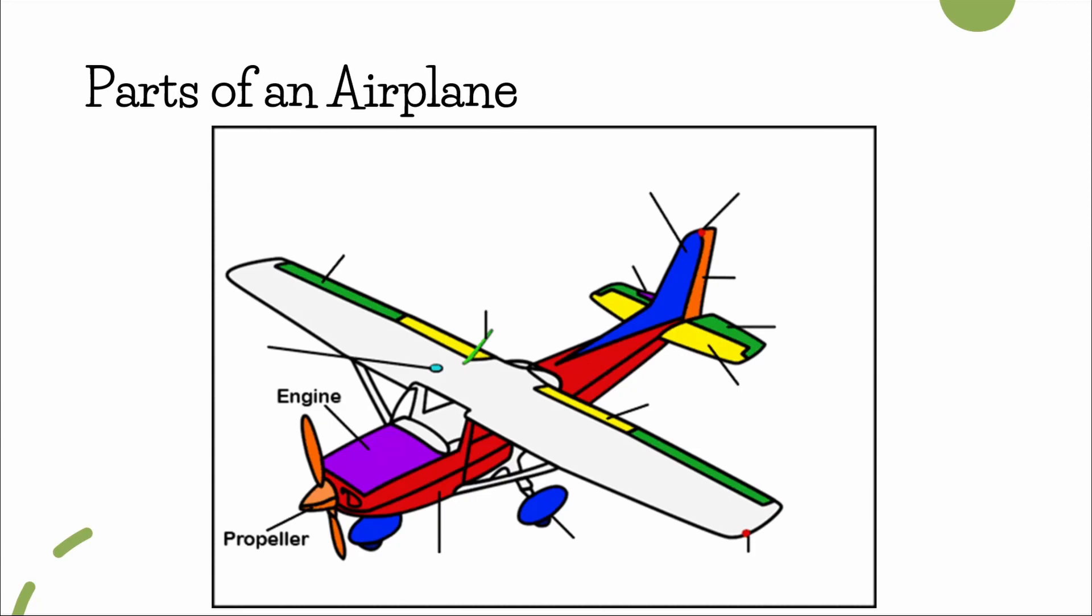In the case of a Cessna, the piston-powered engines power the propeller, which is the source of thrust that allows the plane to start moving.